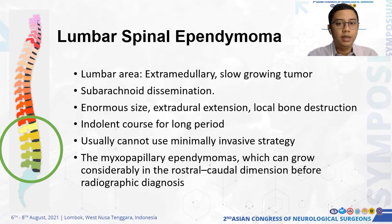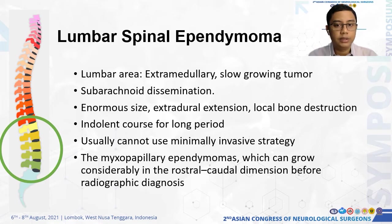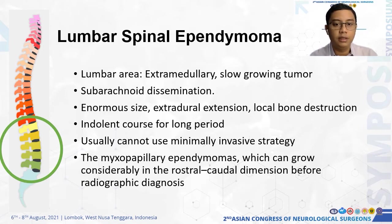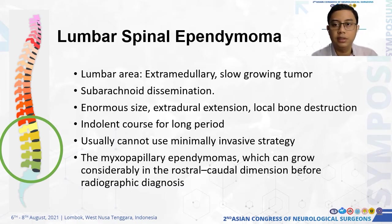Lumbar spinal ependymoma is an extramedullary tumor and slow growing. This tumor can cause dissemination through the subarachnoid, and its enormous size can cause extradural extension and local bone destruction. Because this tumor is slowly progressive and indolent over a long period, it remains asymptomatic, which is why we usually cannot use a minimally invasive strategy. The myxopapillary ependymoma, which can grow in the rostrocaudal dimension larger than schwannoma, is usually used as a differential diagnosis in this area.